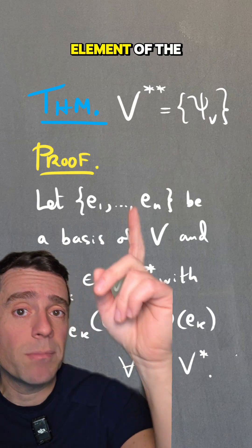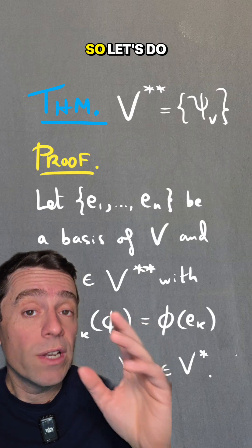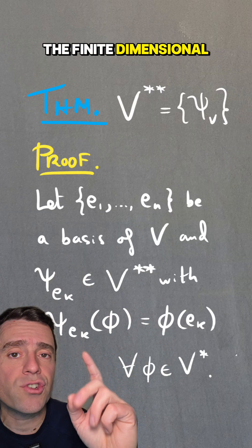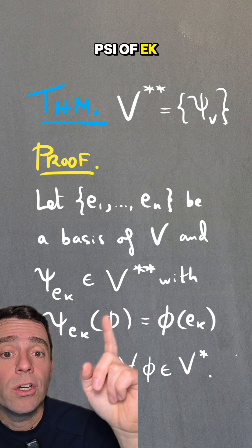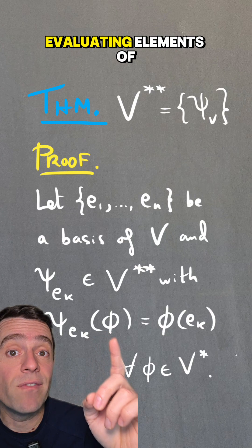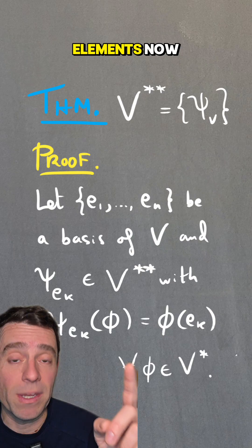So what we want to show is that every element of the double dual is one of those ψ of V. Let's start with any basis of the finite dimensional vector space V. And let's define ψ of e_k to be those elements of the double dual that are just evaluating elements of the dual at e_k, at those basis elements.